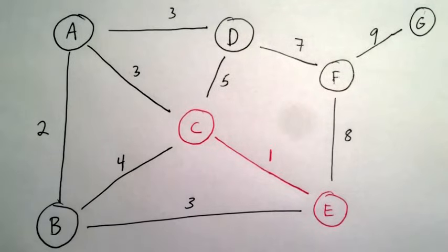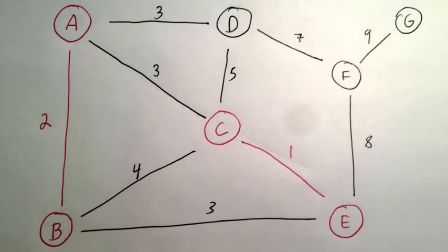We repeatedly look for the smallest edges that don't create a cycle. In this case, edge AB with a weight of 2 is the next edge chosen. You can see that we have two trees forming, however they are not yet connected.